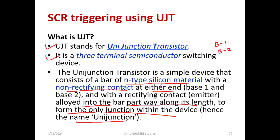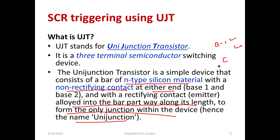What I am trying to explain is that it is having two base terminals — B1 and B2 — and the other one is the emitter terminal. The emitter terminal is actually allowed into the bar part, and that is why it is called only one junction. It gives only one junction. Now, let me find out the symbol of UJT and the basic structure of UJT so that you will be getting a better idea.